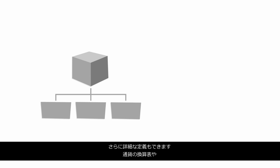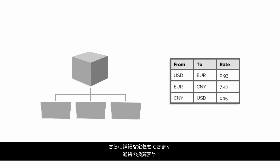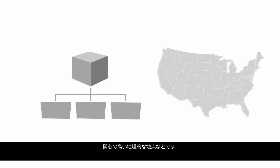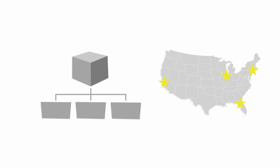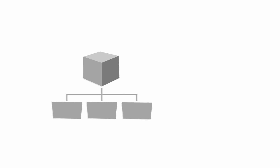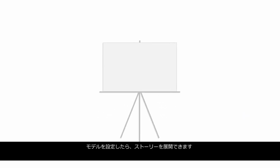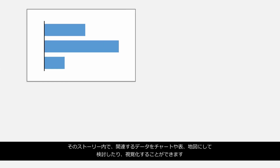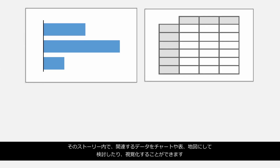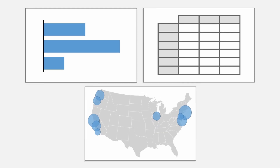You can also define additional details such as currency conversion tables or geographical points of interest. Once your models are set up, you can create stories in which you can explore and visualize the associated data in charts, tables, and geomaps.